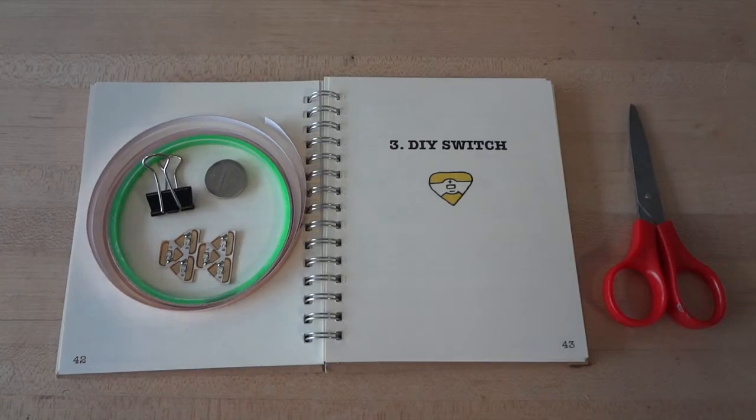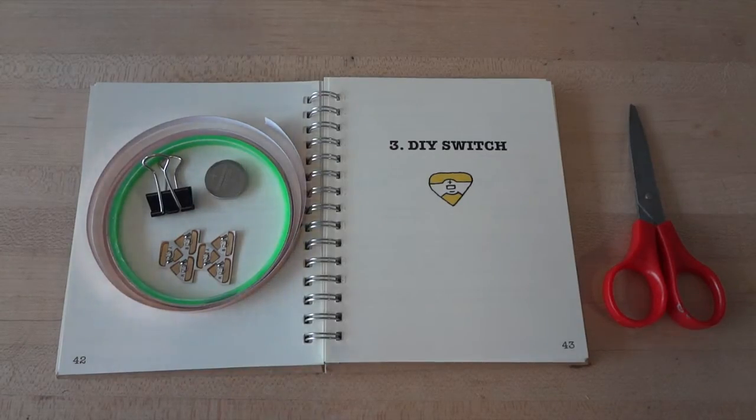For this tutorial, you will need one LED sticker, a coin cell battery, a binder clip, copper foil tape, and scissors to cut your tape.